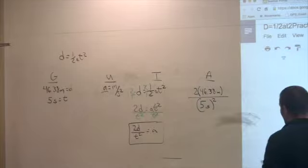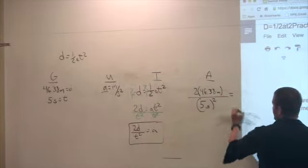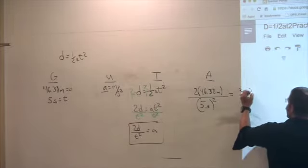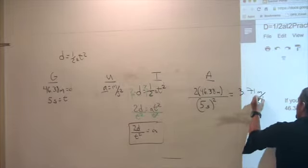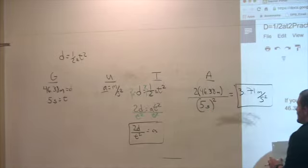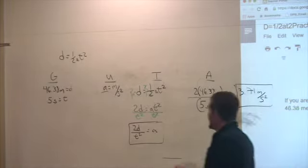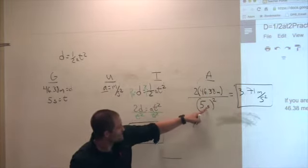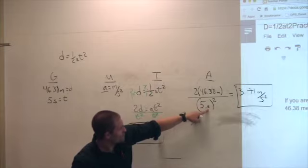When I do all that math, I get 3.71 meters per second squared. Notice acceleration is in the correct units. Because I have this divided by this is a second squared. Meters per second squared.